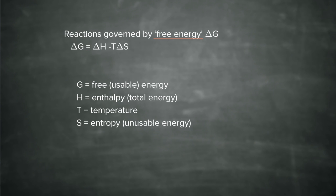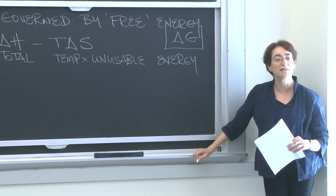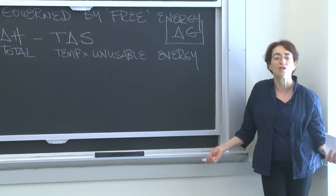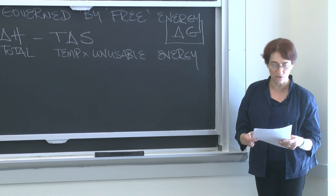Minus temperature times the difference in useless energy. So this is the free energy, this is the total energy, and this is the temperature multiplied by the unusable energy or entropy. So delta G equals delta H minus T delta S is an equation that you should have seen and at least know the terms associated.